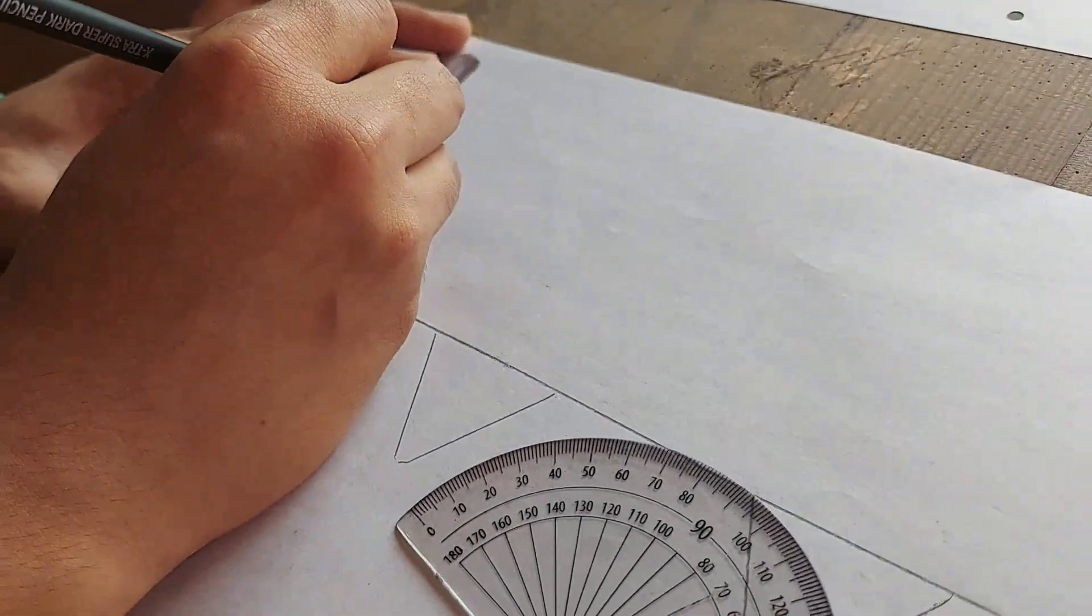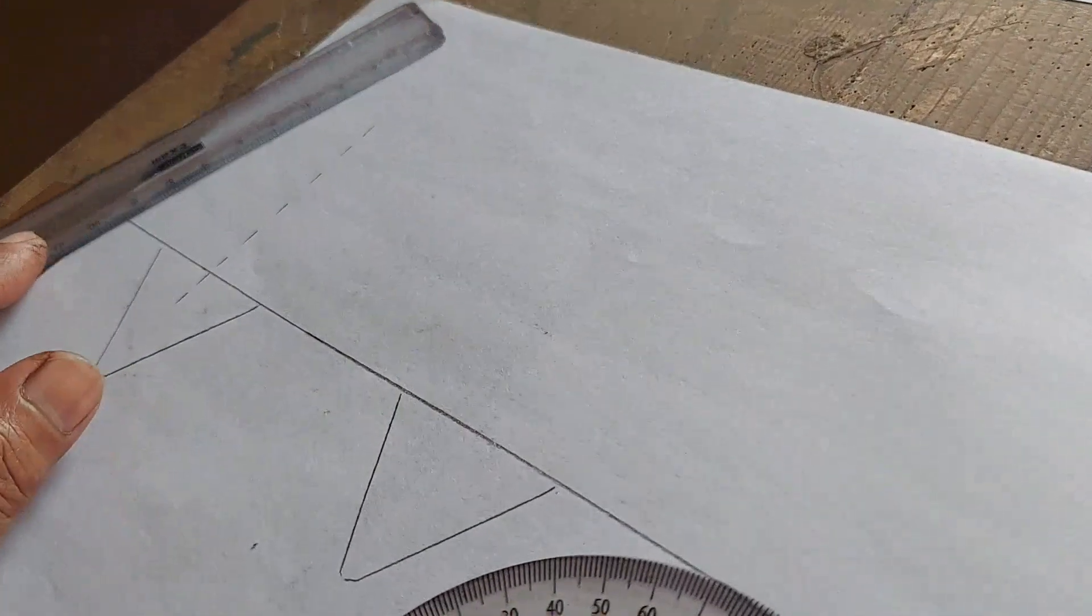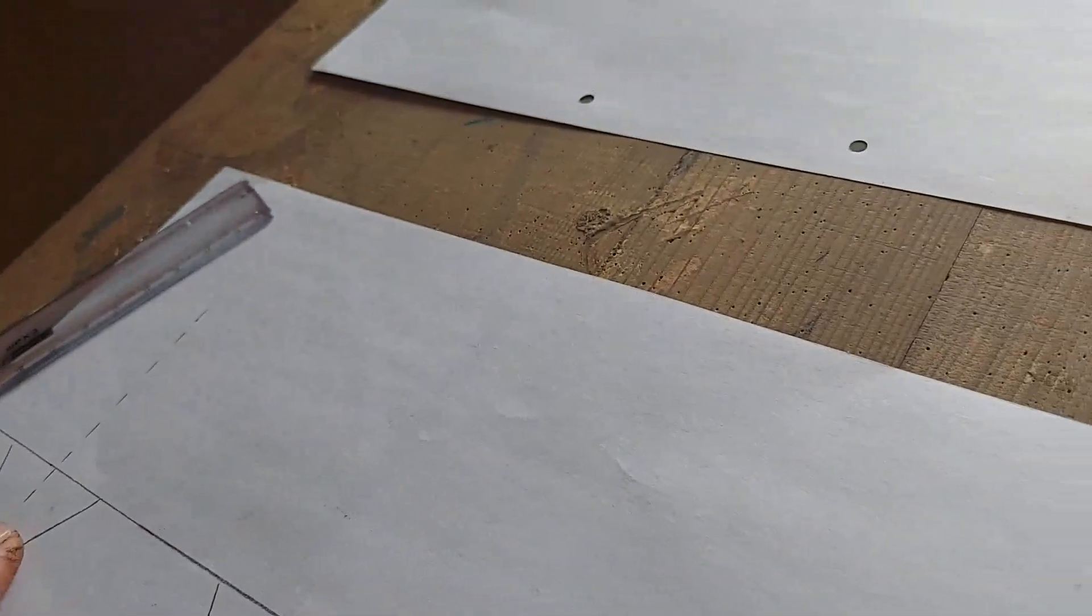Join this with a broken line to make a normal. After this, we draw the angle of incidence.